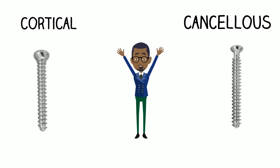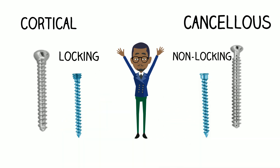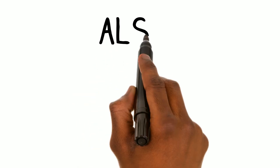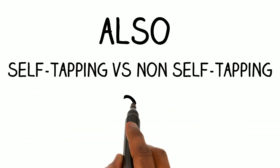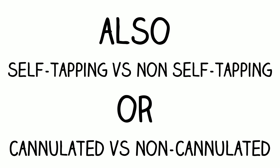Screws can be cancellous or cortical, or locking and non-locking. Self-tapping screws have a fluted tip for clearing bone debris but generally an inferior bone holding ability. Cannulated screws are useful for accurate positioning near articular surfaces.